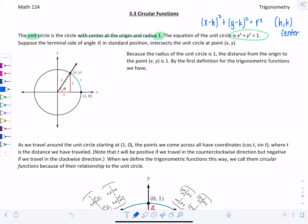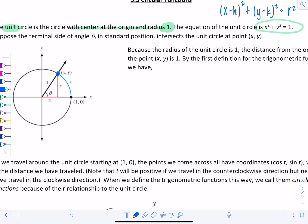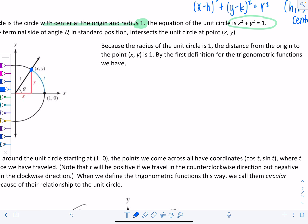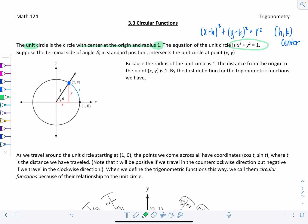What we're going to do now is look at angles and their relationship to the unit circle and the values of the trigonometric functions. Suppose the terminal side of angle theta, which is drawn in standard position, intersects the unit circle at a point x comma y. Because the radius of the unit circle is 1, the distance from the origin to the point x, y is 1. By the first definition for the trigonometric functions, cosine of theta equals x divided by r. So cosine of theta is just equal to the value of the x coordinate of the terminal side where it hits the unit circle.